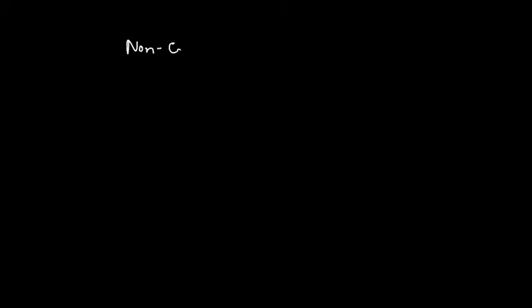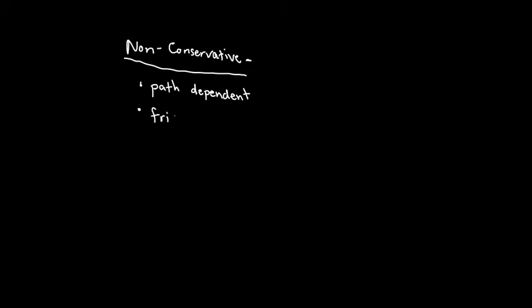In addition to conservative forces, we also have non-conservative forces, which do care about the pathway you take when applying force to produce displacement — they are path dependent. The primary non-conservative force we've discussed is friction. As you push something along the floor, you expend more work the farther you push it. Friction increases the amount of work you have to do, so it's path dependent — it cares about initial and final positions.